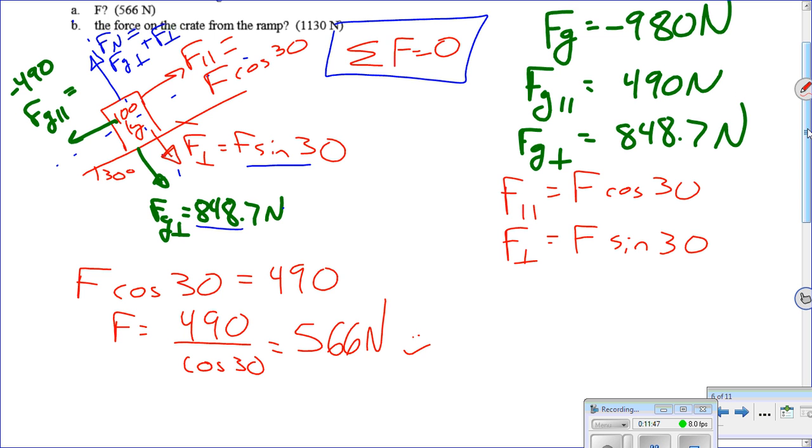My normal force is going to be just the sum of these two things. So I'm going to cheat just to say it's Fg perpendicular plus F perpendicular. We've got to find the magnitude of F based on that. What's the equation that I'm trying to have? My net force is zero. These parallel forces have to cancel each other out. So that means F cosine 30 has got to be 490. And that should give you 566. What's the force on the crate from the ramp? That's the normal force. So my normal force is just going to be that 848 plus 566 times the sine of 30.